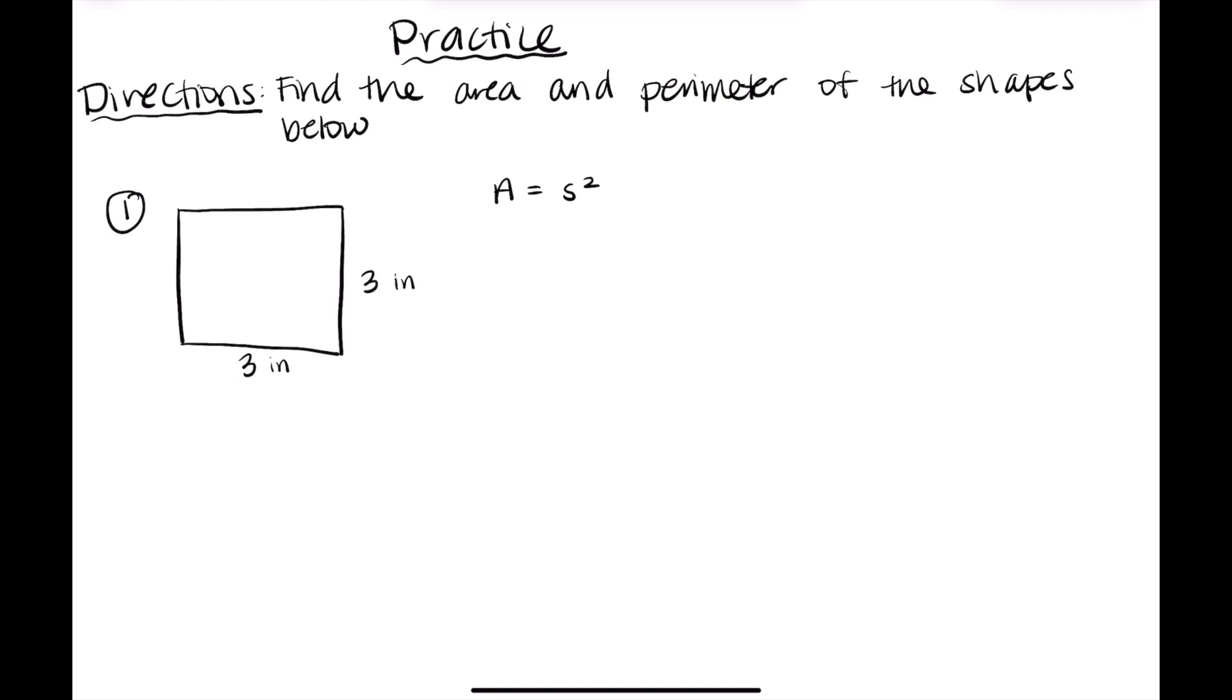The directions for our practice section say to find the area and perimeter of the shapes below. So the first shape we're going to have that I'm drawing out here is going to be a square. So for number one, our square, remember all the sides in a square are the same length. So we are given the side length here of three inches. And if we remember, the formula for area of a square is just that side length squared.